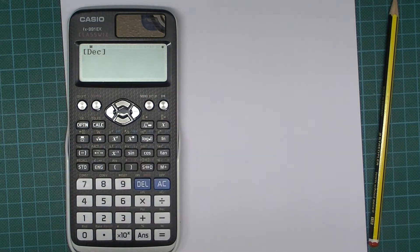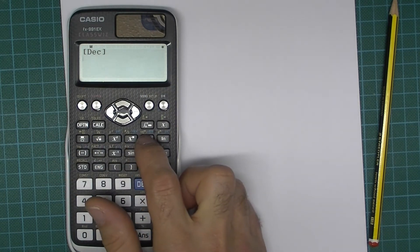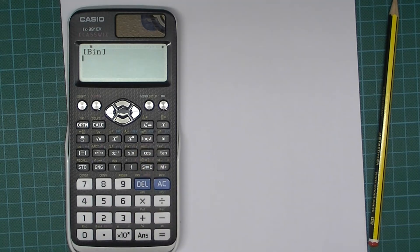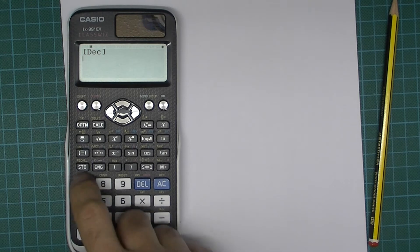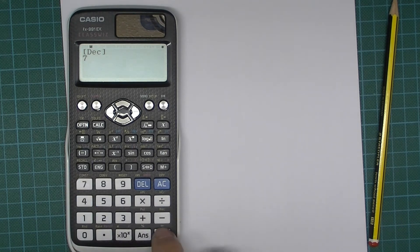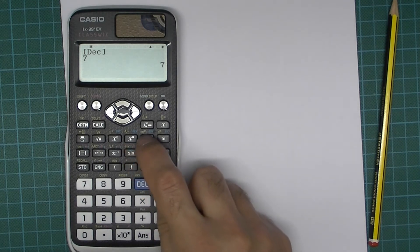You see that we're currently in decimal but if we wanted to go into binary entry we would do it like that. Let's just go back to decimal, let's type the number 7 and press equals so we've got 7 there.